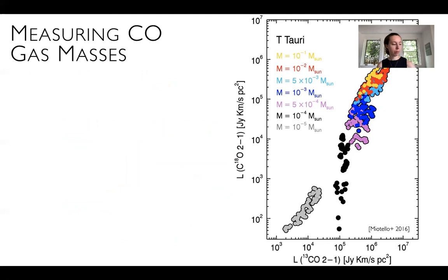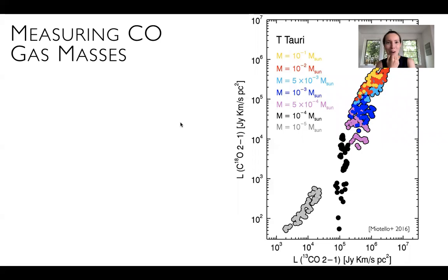One example is a grid of theoretical disk gas masses run through radiative transfer to estimate what their CO isotopologue emission should look like. Running this grid with different disk masses, there turns out to be a pretty tight correlation between CO isotopologue emission and disk mass, which you can use to back out disk masses if you have observations of multiple CO isotopologs.